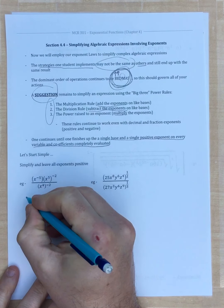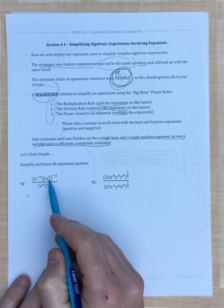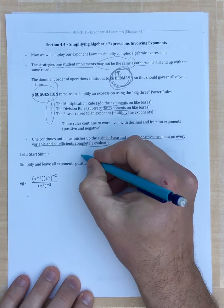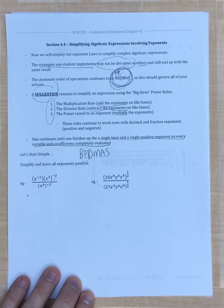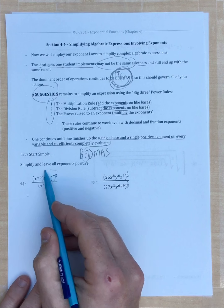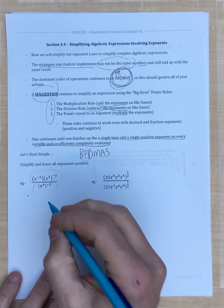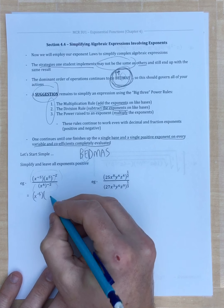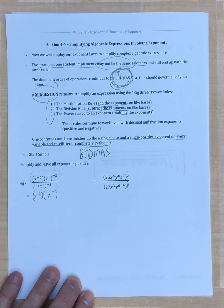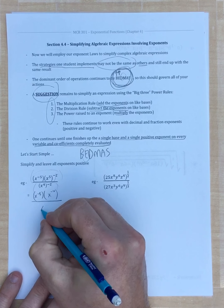Let's start with a simple example involving variable x. You might want to add the negative five and positive five, but remember BEDMAS — exponents come first. We simplify the numerator separately from the denominator. The first term stays; x to the fifth to the negative two becomes x to the negative ten. In the denominator, x to the fourth to the negative two becomes x to the negative eight.